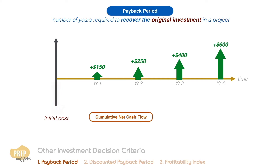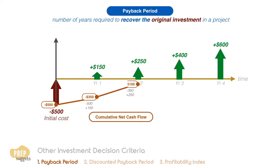The first cash flow is an outflow of $500, so the cumulative net cash flow is minus $500. In the next period we add $150 to it, so the cumulative rises to minus $350. Next we add another $250 and get minus $100. Add another $400 and the cumulative becomes positive $300 at the end of year 3.